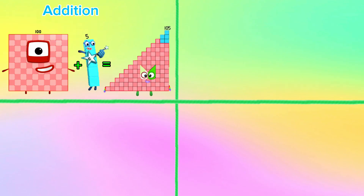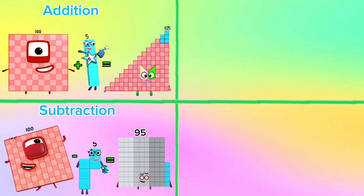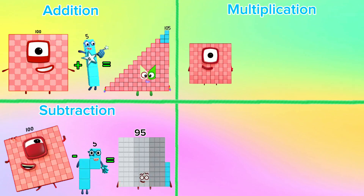In addition, 100 plus 5 is equals to 105. Next, in subtraction, 100 minus 5 is equals to 95. Let's try multiplication.